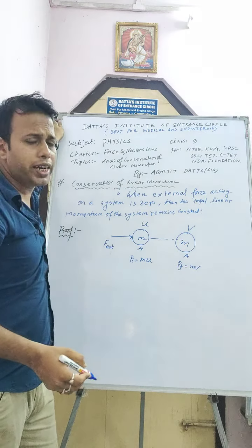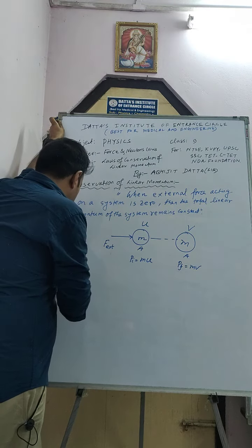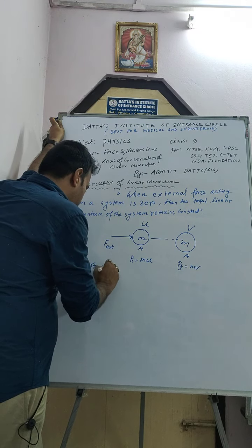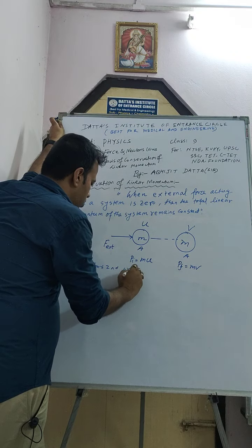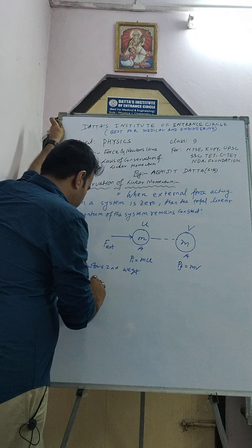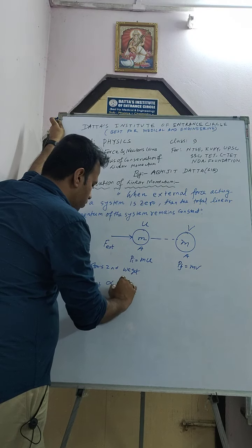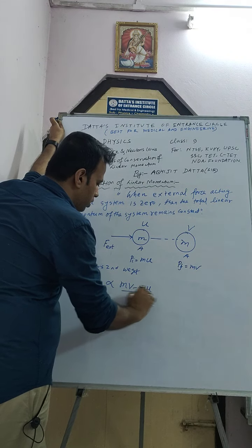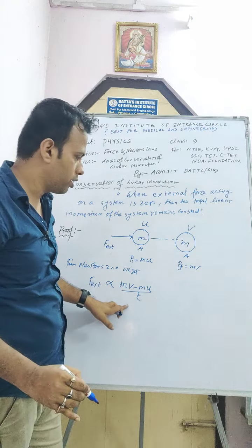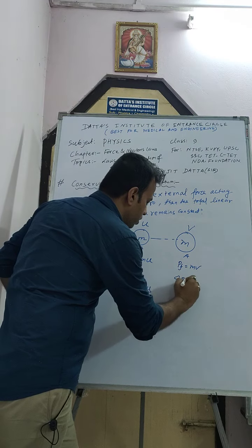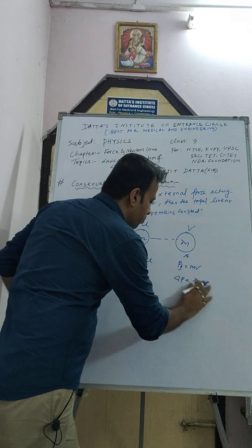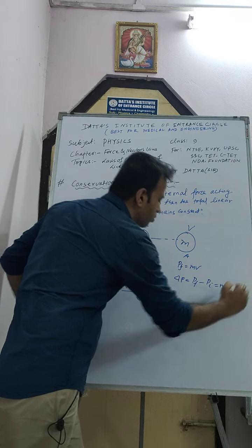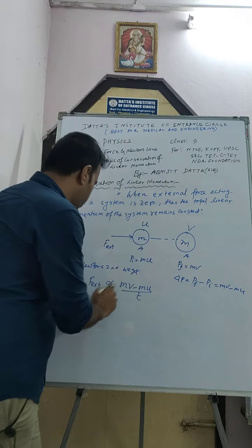From Newton's Second Law, we get that external force is directly proportional to the rate of change of momentum. That is, the rate of change of momentum equals change in momentum over time: F_ext = k × (mv − mu) / t. The change in momentum Δp = p_f − p_i = mv − mu.